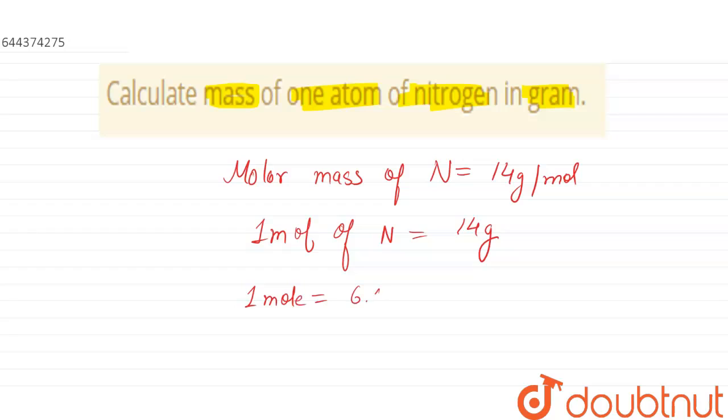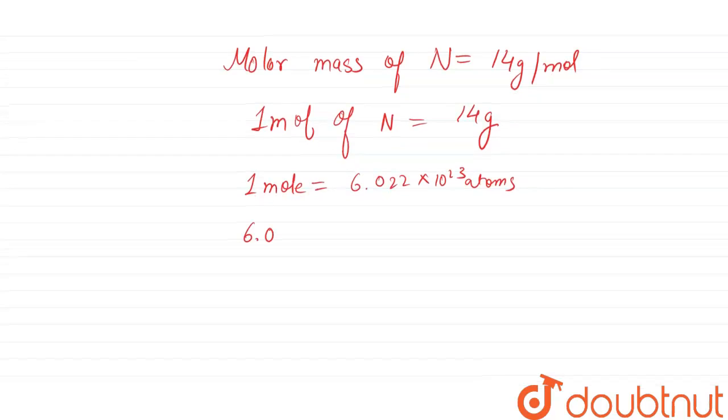One mole has 6.022 into 10 to the power 23 atoms. So that means we can write it like this: 6.022 into 10 to the power 23 atoms